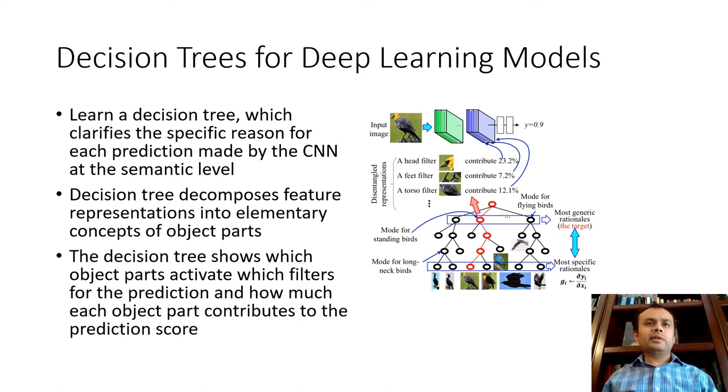Another method which combines insights from decision trees works as follows. So the idea is that once we have created the model, then we learn a decision tree, which can be used as a proxy to clarify the specific reasons for each prediction made by the CNN at the semantic level. And so what the decision tree actually does is to decompose feature representations into its constituent concepts. And the explanation in this case constitutes which parts of the decision tree activate which filters for prediction and contribution of each pathway to the prediction itself.